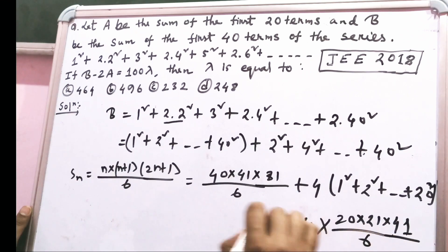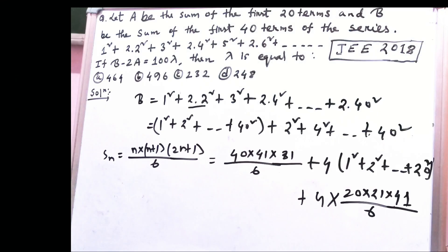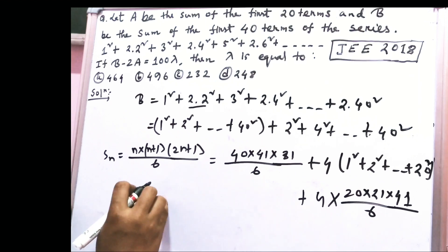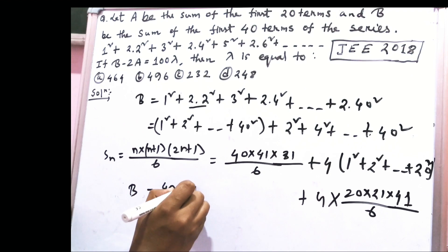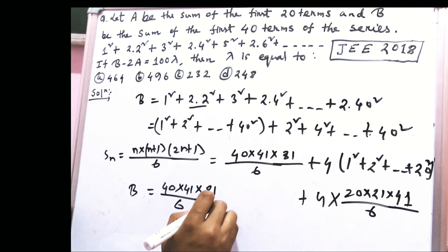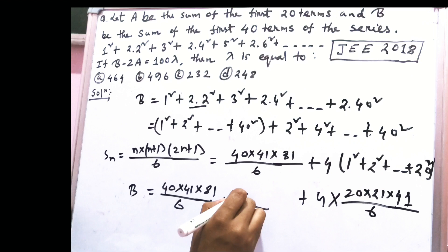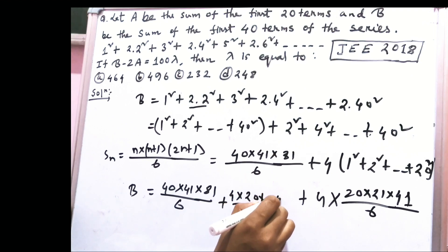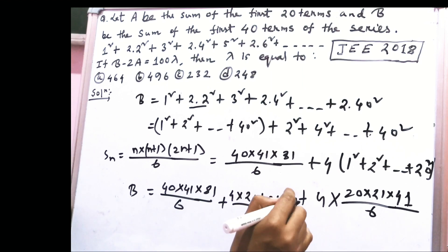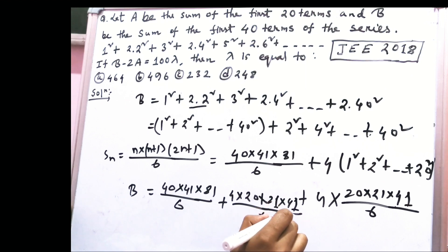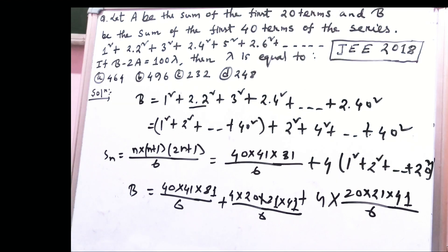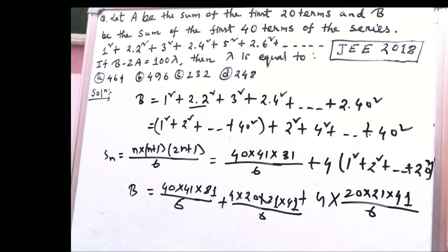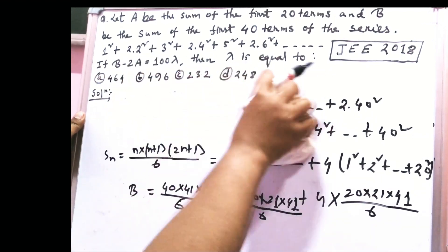So B = 40·41·81/6 + 4·20·21·41/6. We don't need to calculate this right away — after finding A, we'll manipulate the expressions together to get the solution easily. Let's find A.